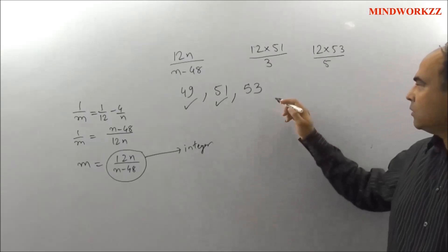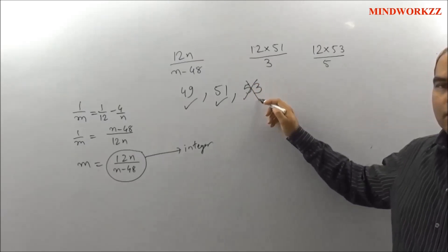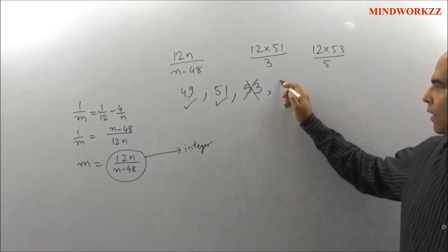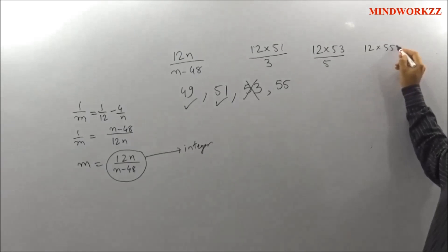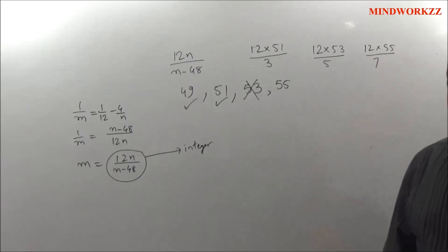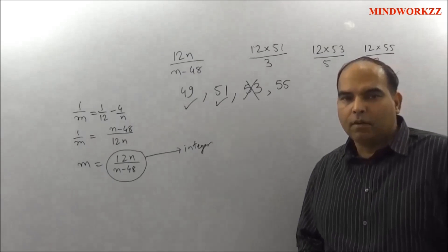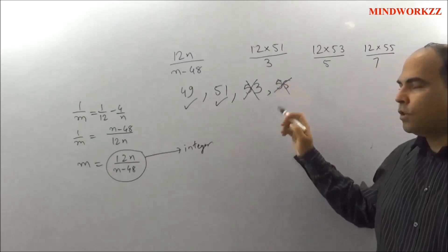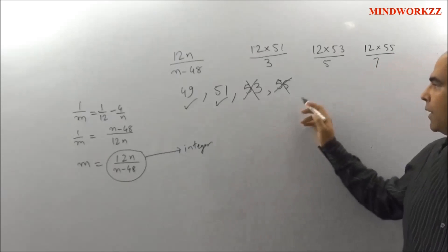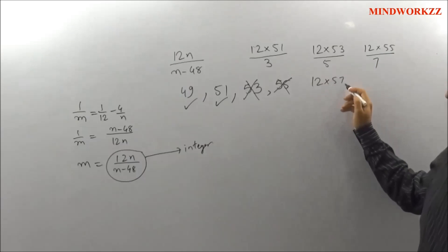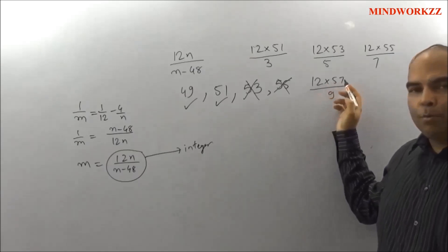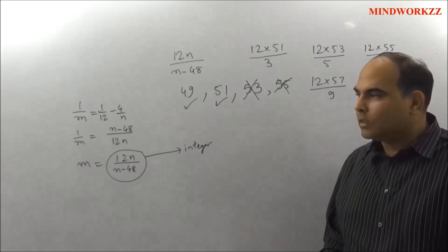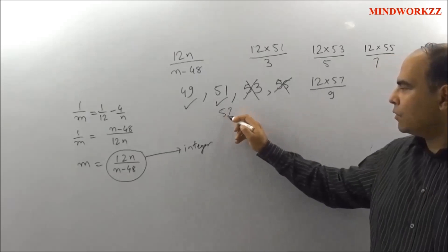With 55, you get 12 × 55 / 7, which again will not get cancelled out. Hence 55 is not a solution. With 57, you can check 12 × 57 / 9, where you will have enough 3s in the numerator to cancel the 9 out, and hence 57 is giving you a solution.